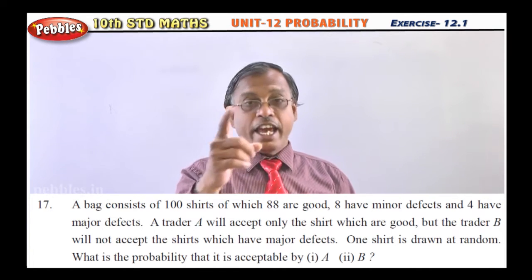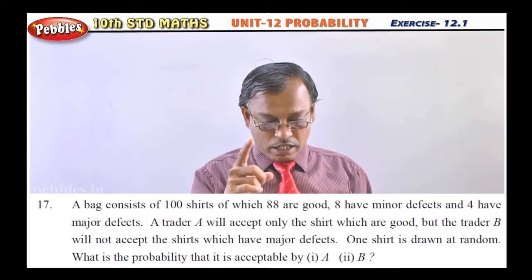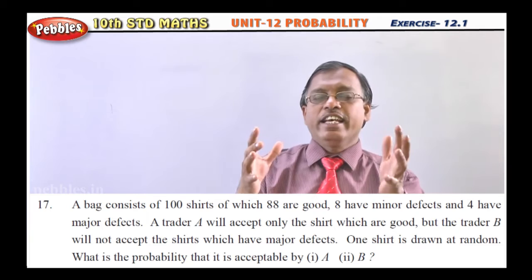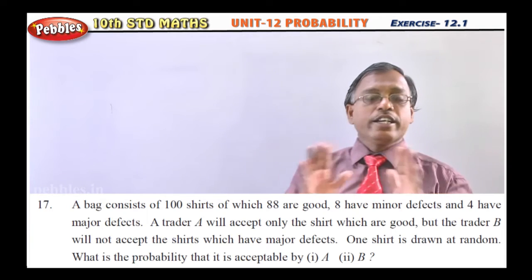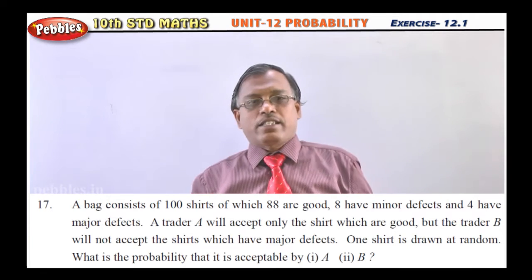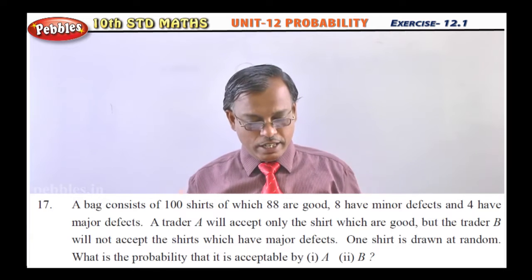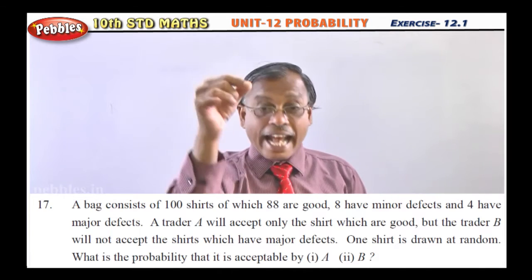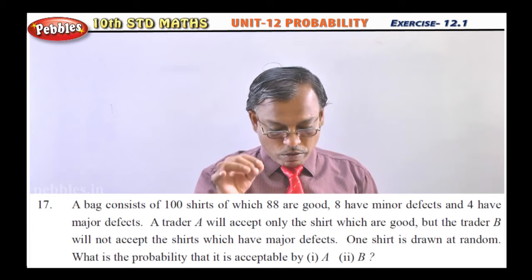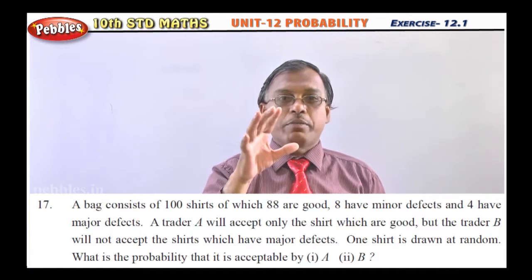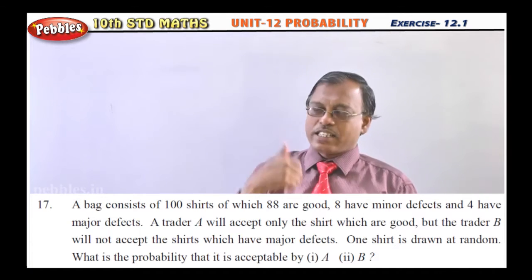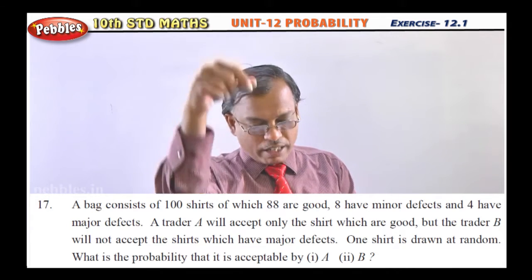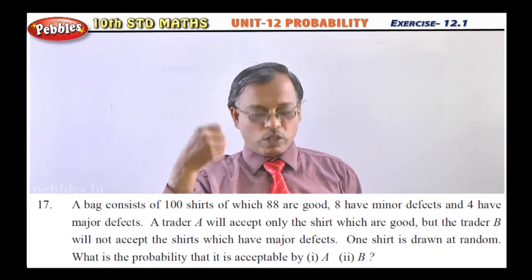Trader A will accept only the shirts which are good — he does not want any shirts with minor defects or major defects. But trader B will not accept the shirts which have major defects; minor defects he will accept. Now one shirt is drawn at random — meaning we are selecting one shirt.